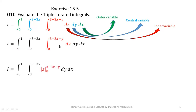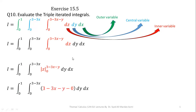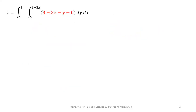First of all, we will start integration with respect to Z. Integration of dZ is simply Z, evaluated for the limit 0 to 3 minus 3X minus Y. Applying the fundamental theorem of calculus — upper limit minus lower limit — and making the simplification, we have 3 minus 3X minus Y. This completes integration with respect to our most inner variable, Z.